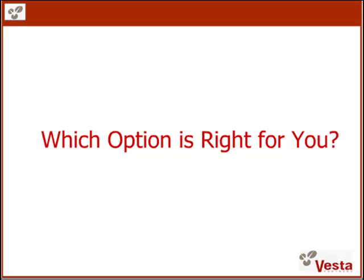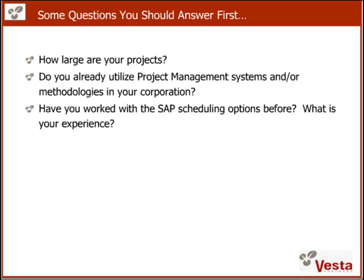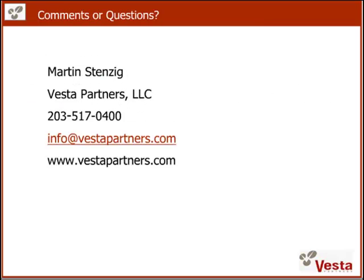Which option is right for you? This is something we would like to discuss with you directly. To kickstart the process, we put together a preliminary list of questions to help determine which solution is most suitable: How large are your projects? Do you already use a project management system and methodologies in your organization? Have you worked with SAP scheduling before, and what is your experience? We can use your answers to determine the best solution for your specific business. If you have any questions or would like help with your selection or implementation, send us an email to info@VestaPartners.com or contact us by phone at 203-517-0400.